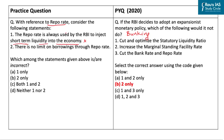This statement is incorrect because the repo rate is not only used for short-term but can also be utilized for long-term liquidity injection in the economy, as seen in the example of Long Term Repo Operations (LTRO). Thereby, the duration of repo ranges from one day to three years. Moving on to the second statement: it says there is no limit on borrowings through the repo rate. This is also wrong, as there is a limit on borrowings under the repo rate, which stands at 1% of net demand and time liabilities.